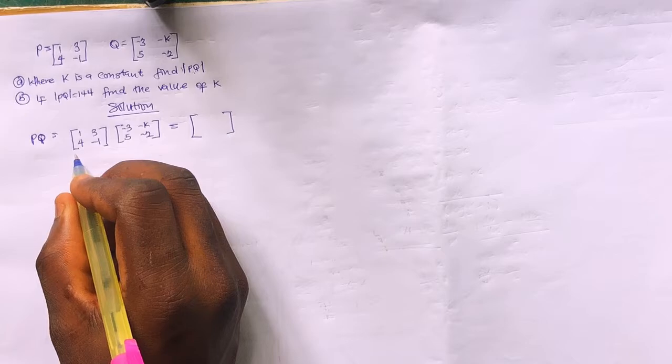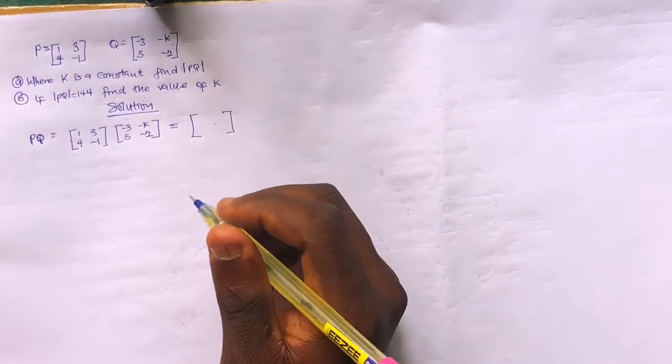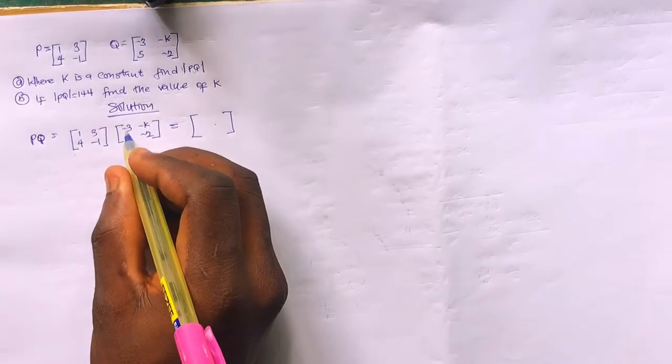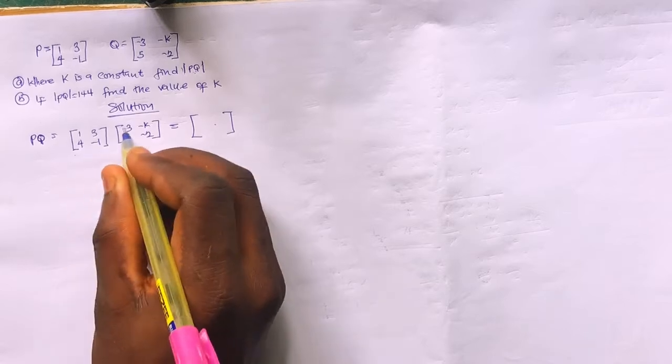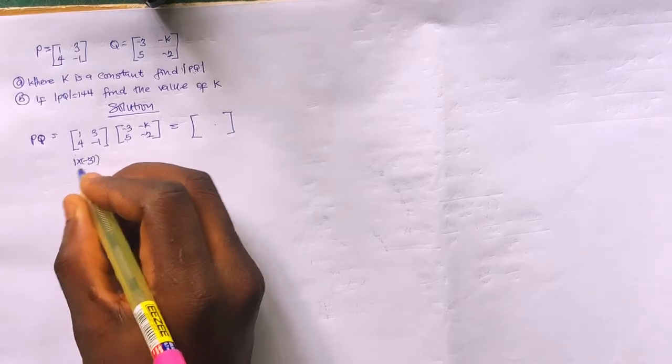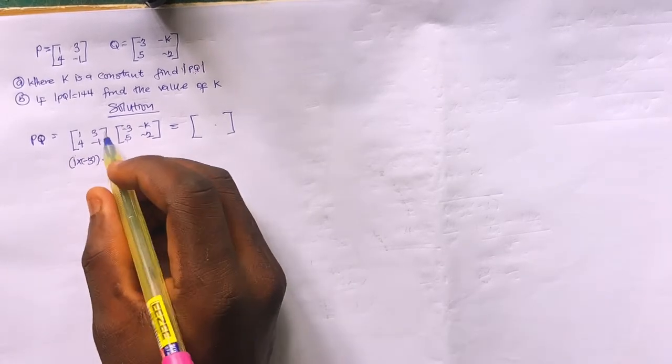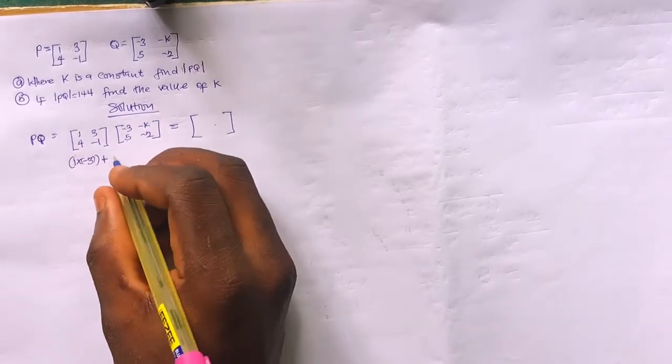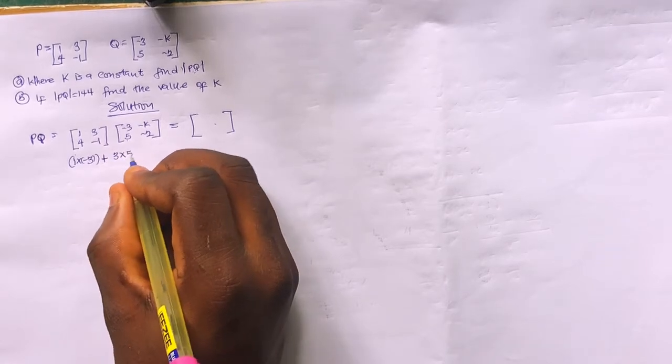The answer will also be a two-by-two matrix. I'm showing the workings here. To multiply, we use row-by-column multiplication — this row with that column, row with column, row with column.